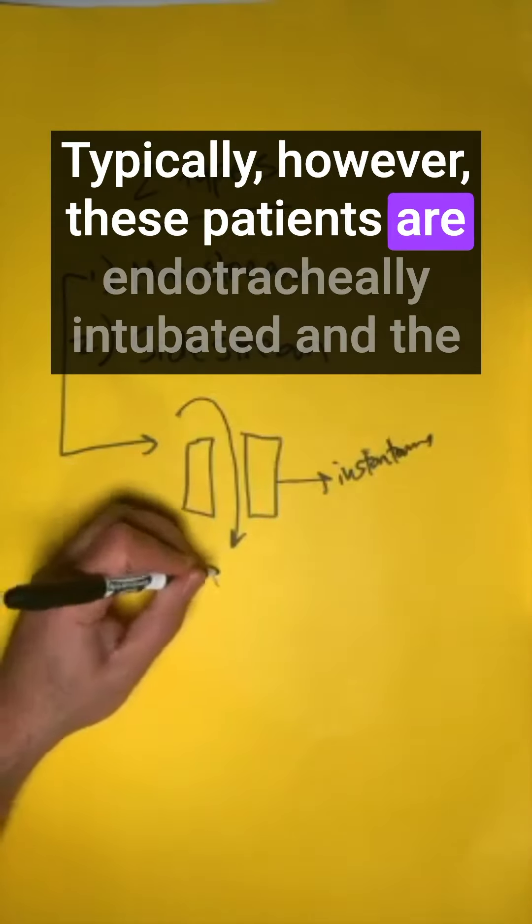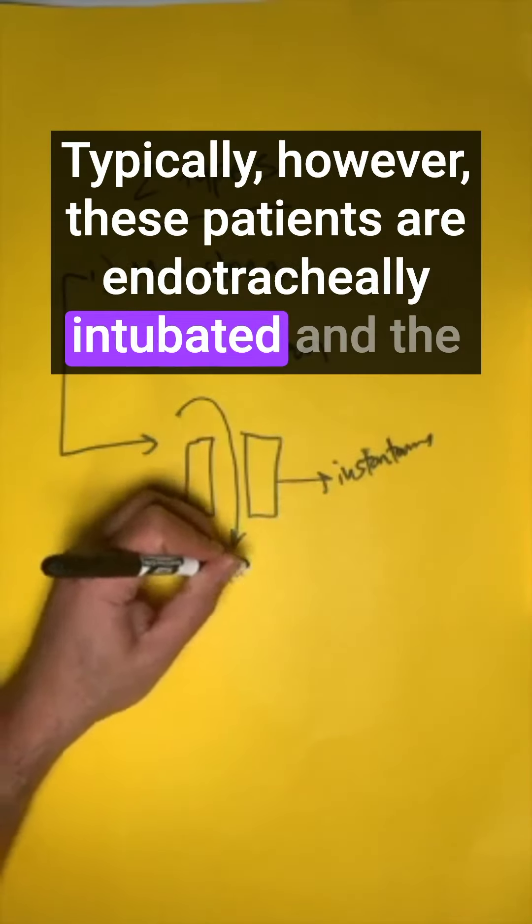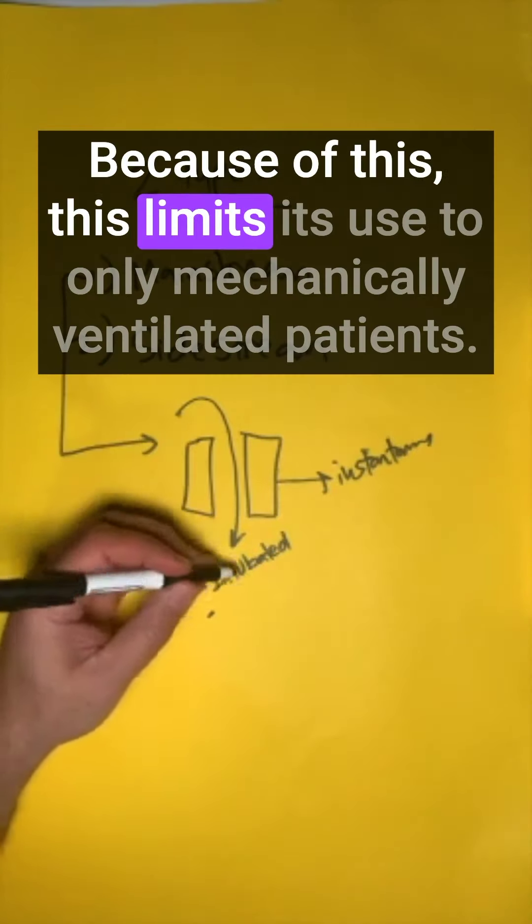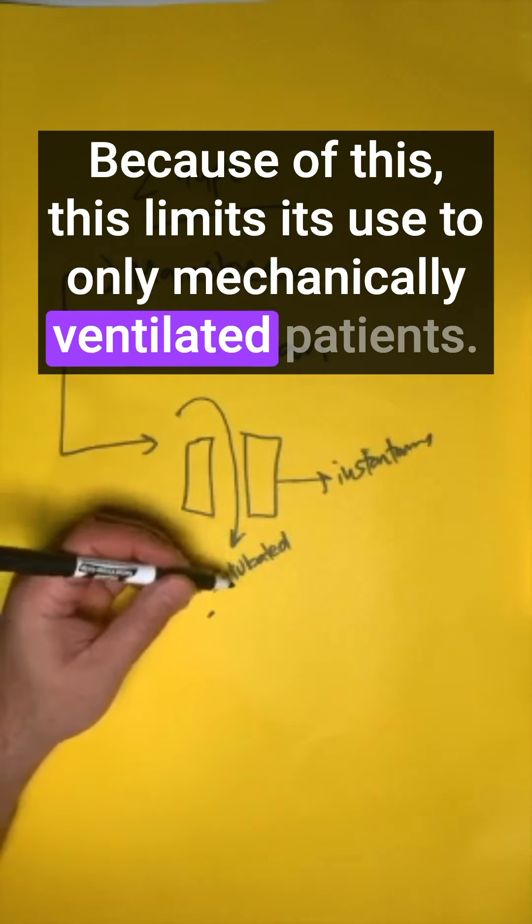Typically, these patients are endotracheally intubated, and the endotracheal tube passes air right through the sensor. Because of this, it limits its use to only mechanically ventilated patients.